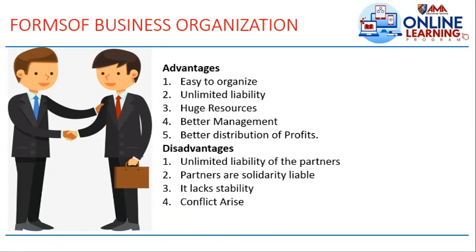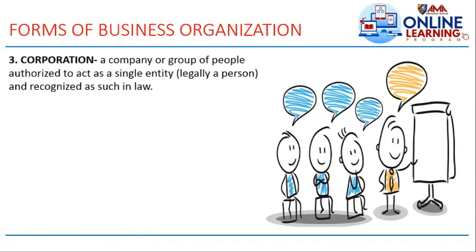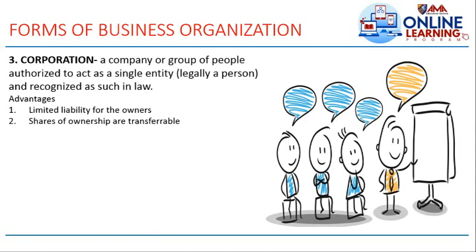The next form is corporation — a company or group of people authorized to act as a single entity, legally recognized as such in law. The advantages include limited liability for owners, because creditors look to the business itself rather than the individual owners, since there are many owners in a corporation.